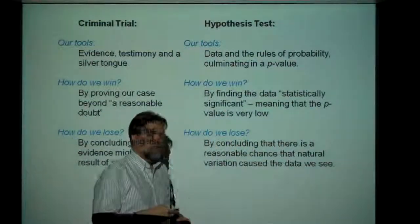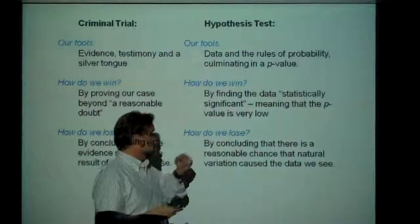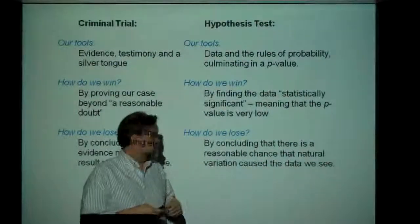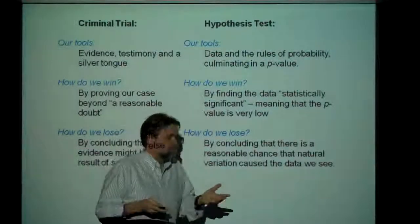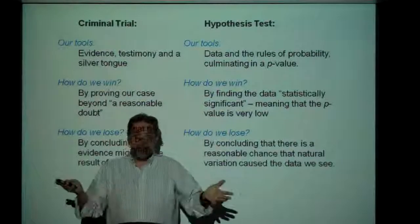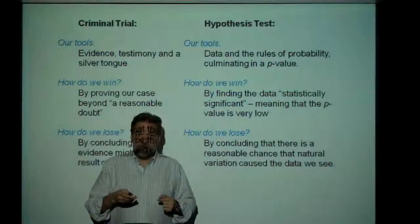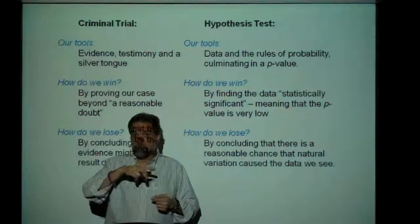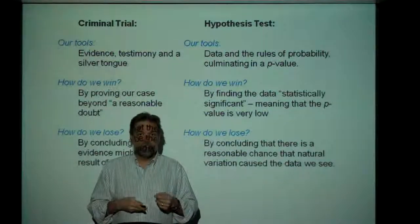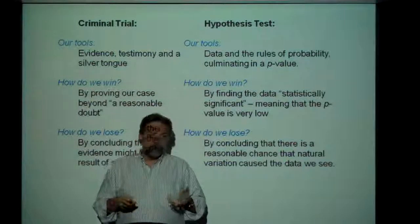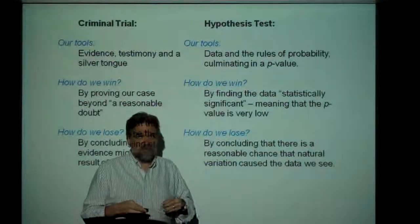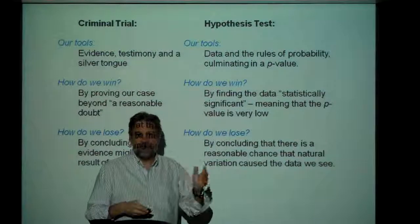We lose by concluding that there's a reasonable chance that this weird data we found is actually just natural variation. We've seen that there's variation in anything — variation in the values of P-hat that we get based on the size of the sample we chose. Maybe it's a little off, but maybe that can just be explained by natural variation.